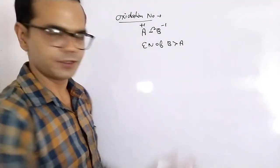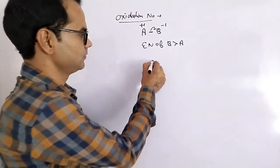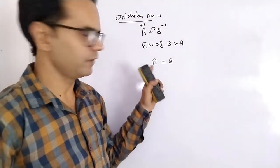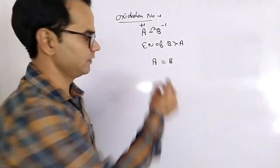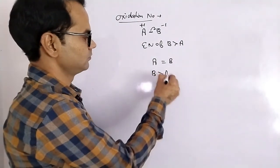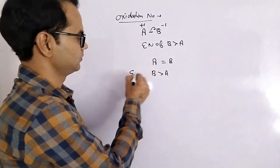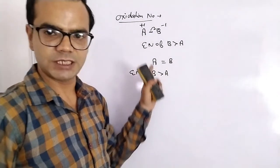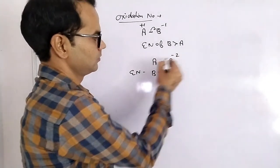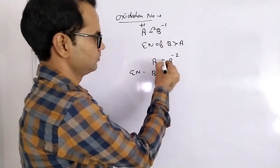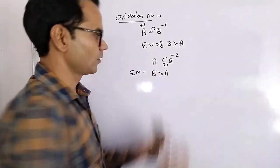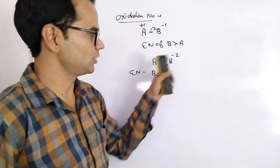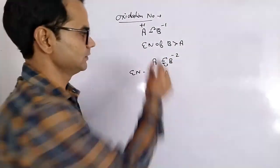But if there is a double bond between A and B, and again the electronegativity of B is higher than that of A, both bond pairs will attract towards B. So the charge on B is minus two and the charge on A is plus two.